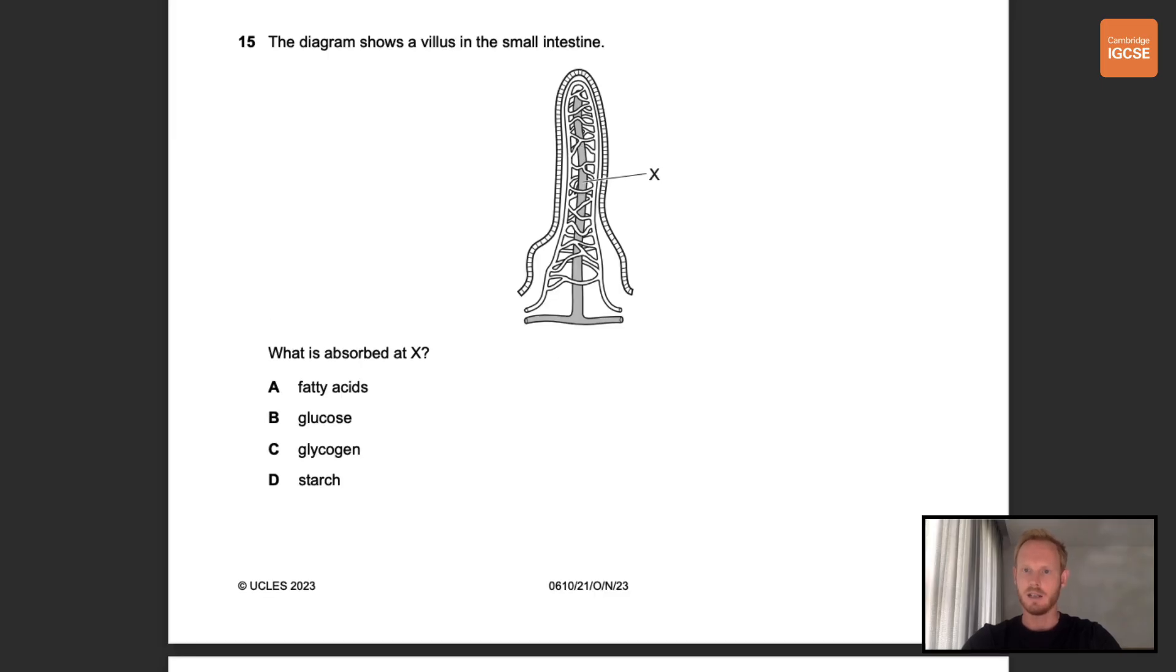Number 15. The diagram shows a villus in the small intestine. What is absorbed at X? So X is pointing to a single vessel called a lacteal. The role of lacteals is to absorb digested fats. So the correct answer is A, fatty acids.